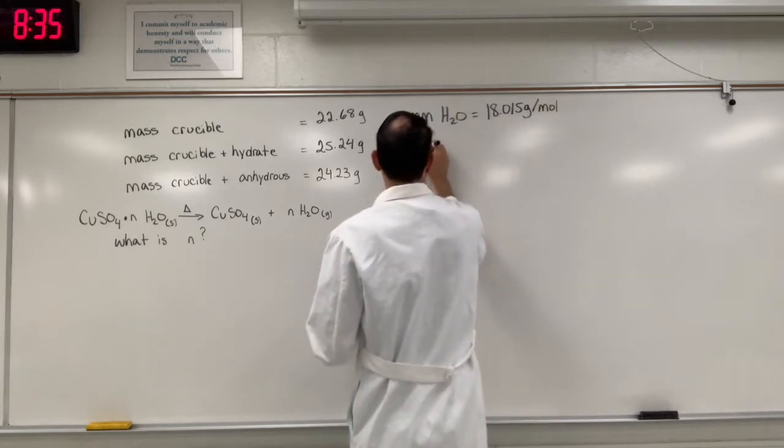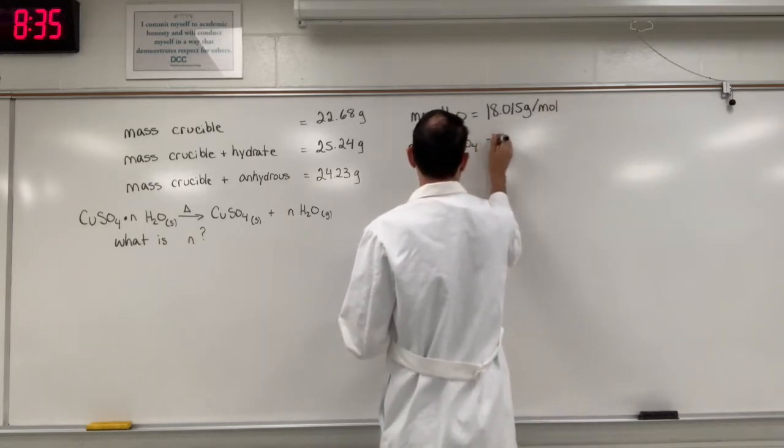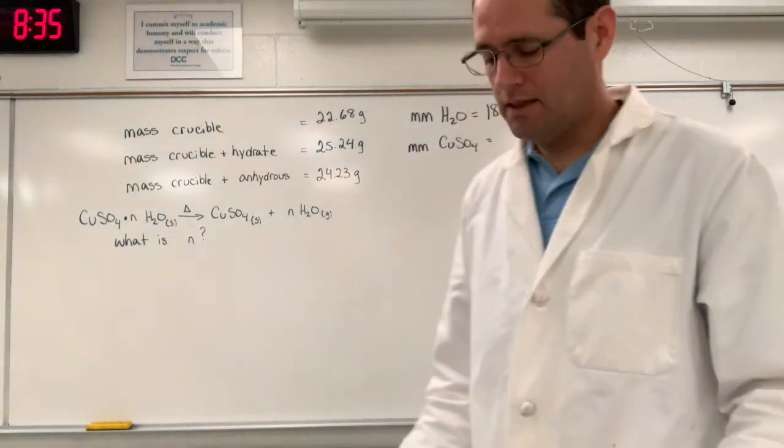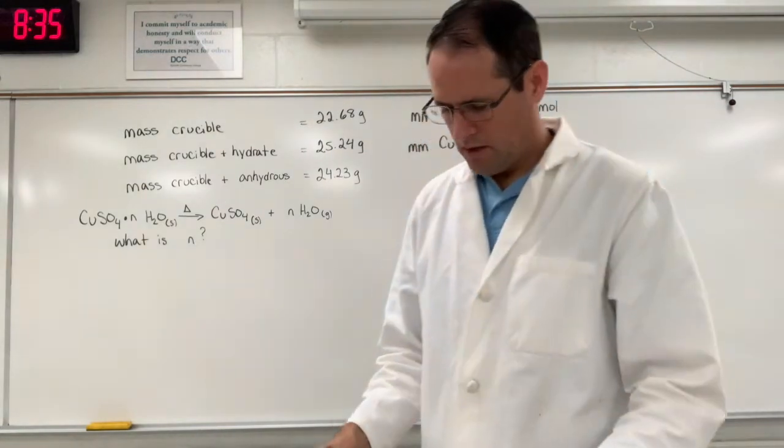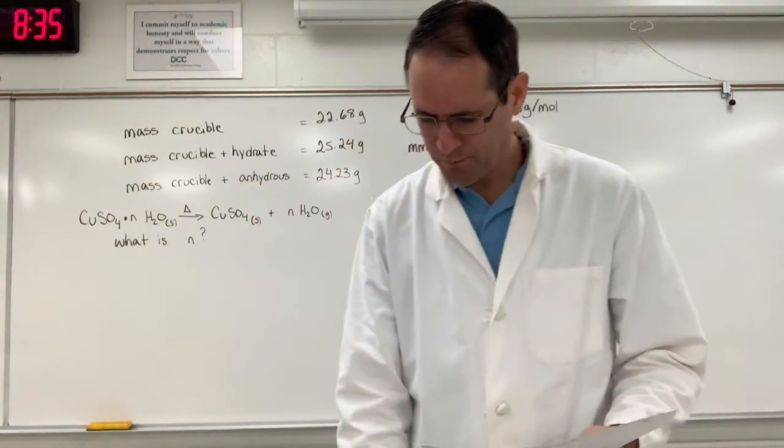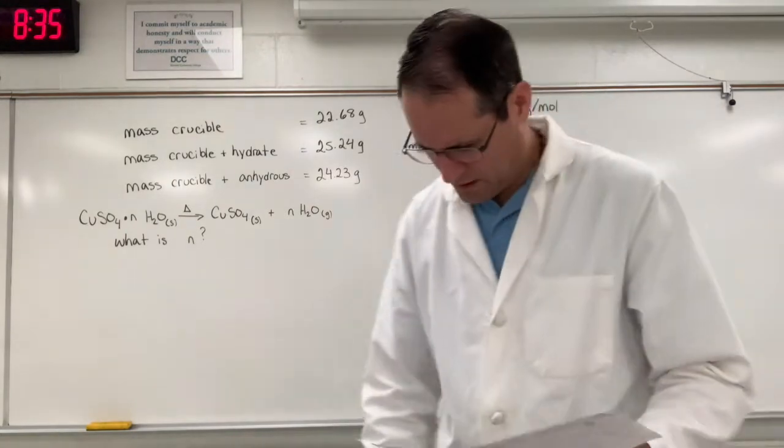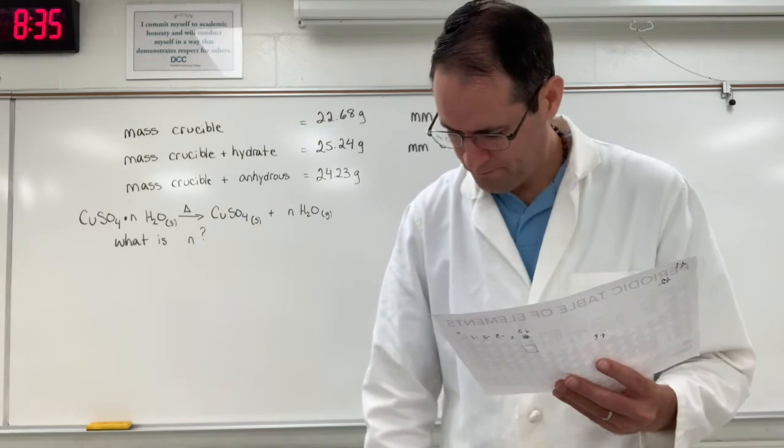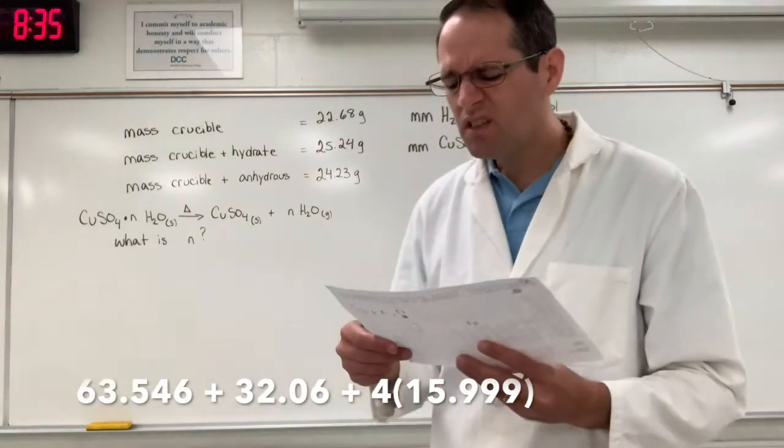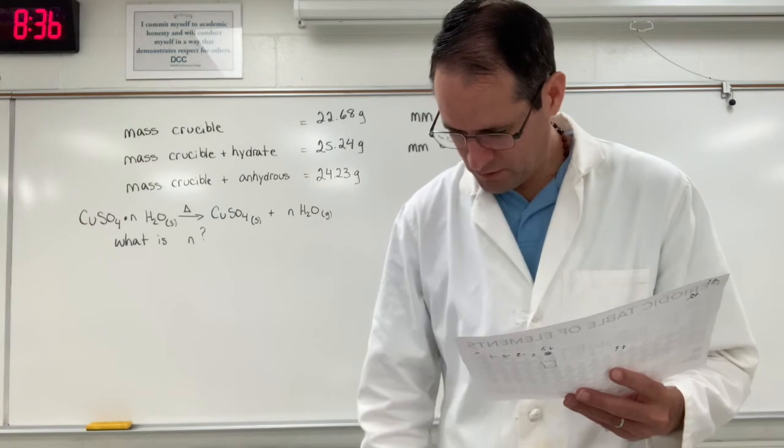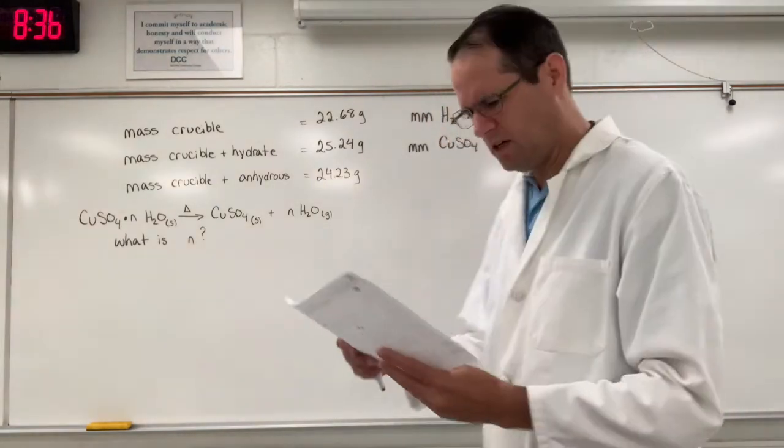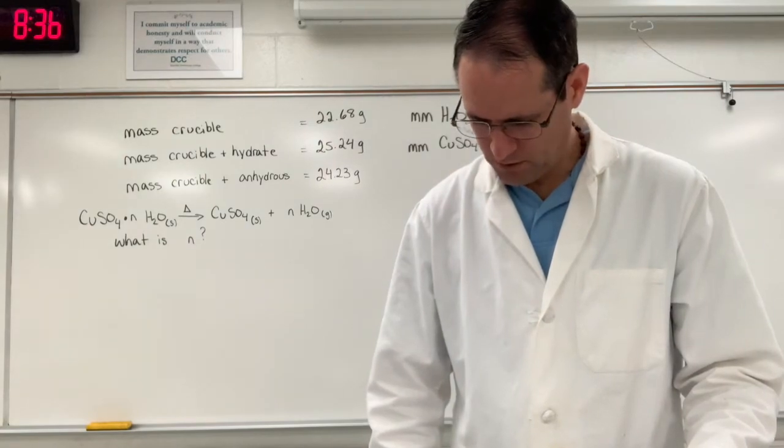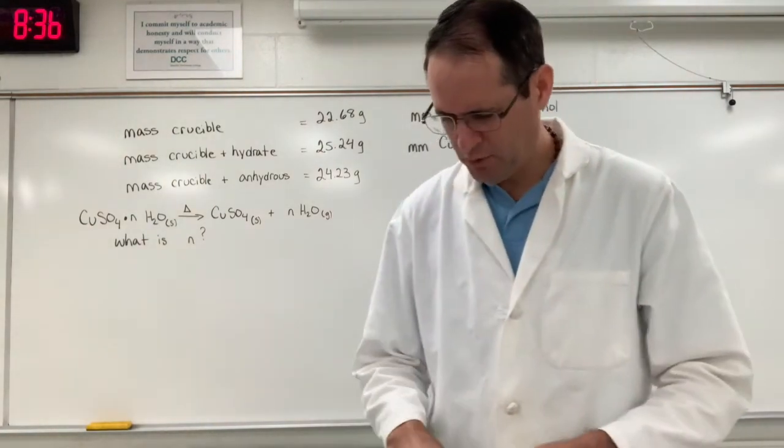And then we also want to know the molar mass of copper sulfate. That's without water. We don't know how many water molecules are in here or how many we calculate, really. So copper is, well I'm going to do the four oxygens first. So four times 15.999, add one sulfur 32.06 and a copper atom weighs 63.546 atomic mass units or grams per mole.